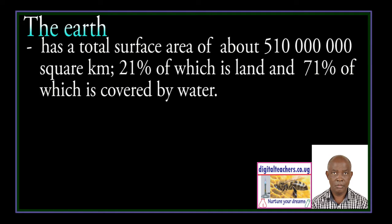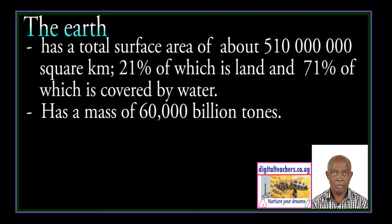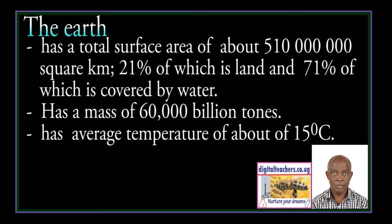It has a total surface area of about 510 million square kilometers, 21 percent of which is land, 71 percent of which is covered by water. It has a mass of 60,000 billion tons. It has an average temperature of about 15 degrees Celsius.